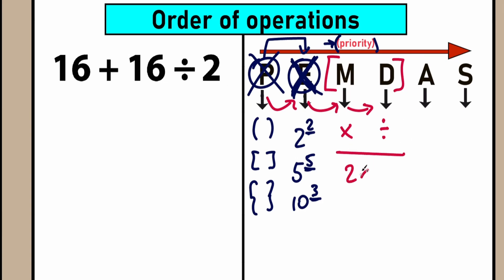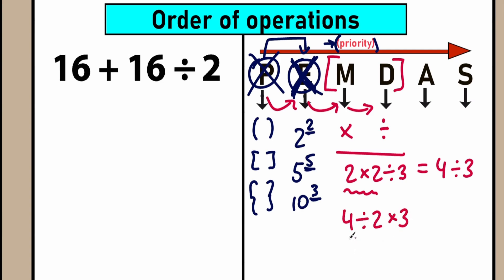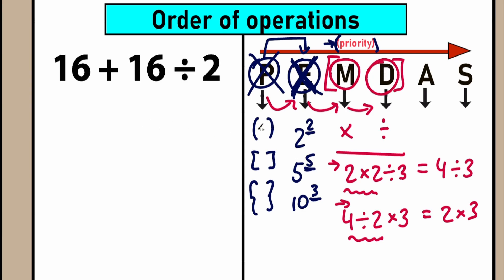For example, if we have 2 times 2 divided by 3, multiplication comes first from the left, so we get 4 divided by 3. But if we have 4 divided by 2 times 3, we divide first because division is the first sign coming from left to right, giving us 2 times 3. Multiplication and division are tied for priority — we evaluate whichever comes first from left to right. Now let's scan our question for multiplication and division signs.